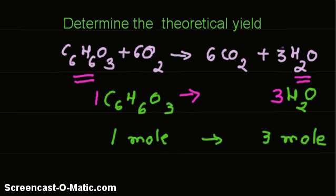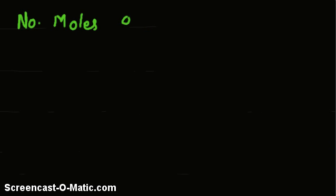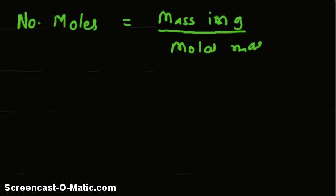Since we have been given the mass of C6H6O3, we will first convert the mass into moles. Number of moles equals mass in grams divided by molar mass. That is equal to 252 divided by 126, and we get two moles.